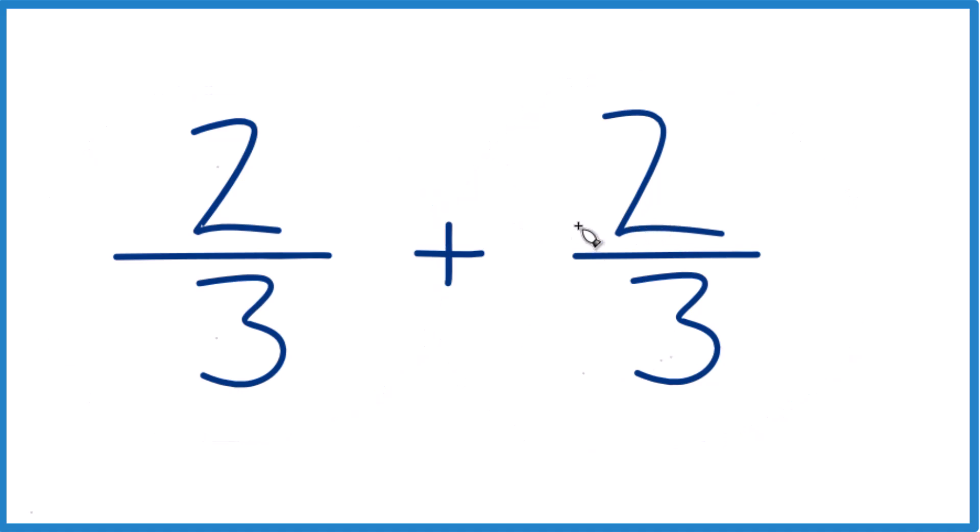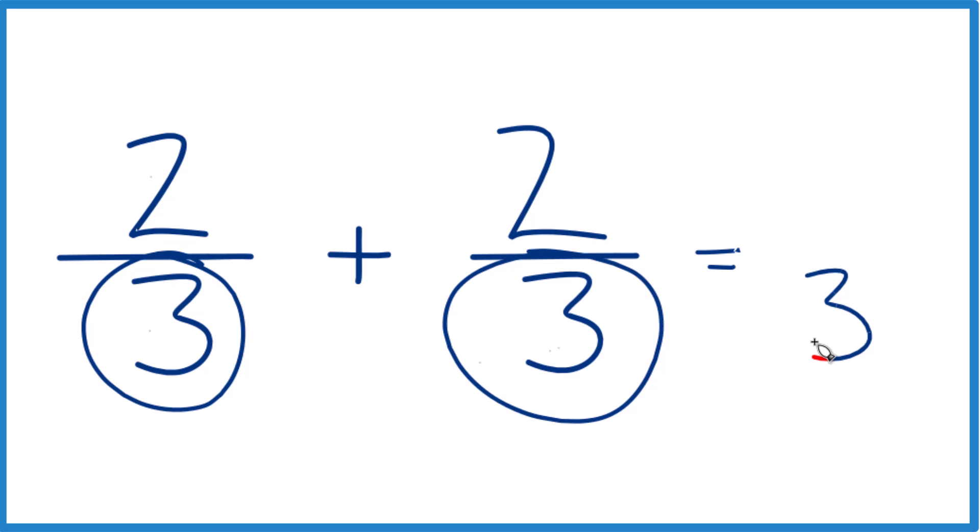When you're adding fractions, if you have the same denominator, so you have a common denominator, when we add those, we'll just keep that the same across the bottom. So our denominator will be 3.